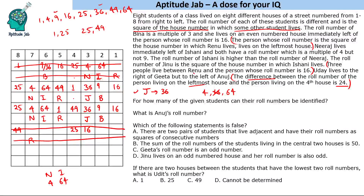Udai lives to the right of Gita but to the left of Anuj, so the order is: Gita, Udai, Anuj. This gives two possibilities for their arrangement in the remaining positions. Almost all other conditions are resolved; only these two people's roll numbers remain uncertain. So for six students we can identify the roll numbers, while two remain uncertain. Anuj's roll number in either case is 16.